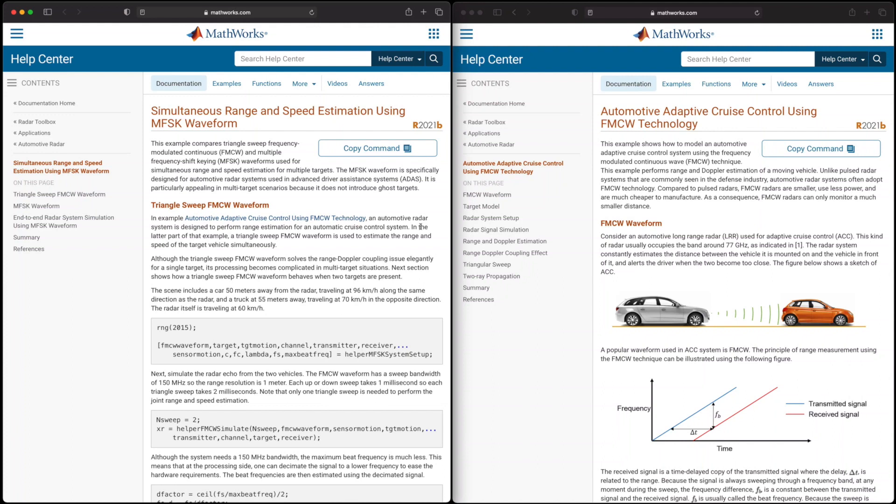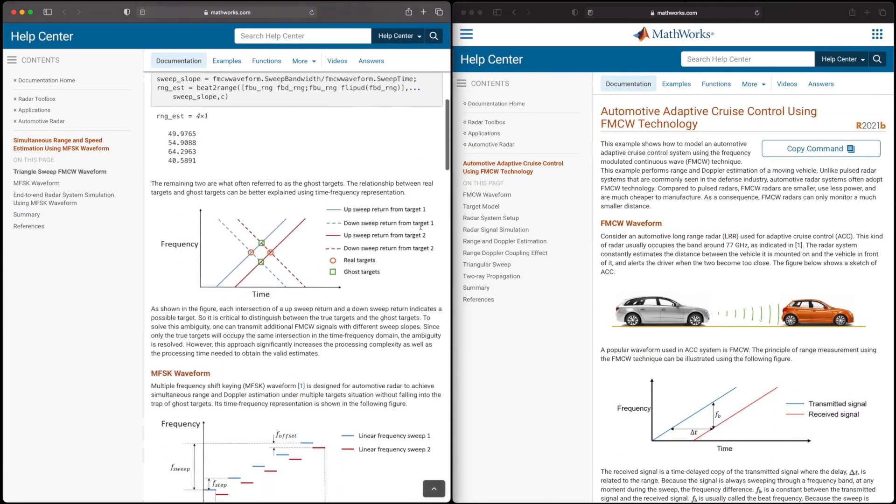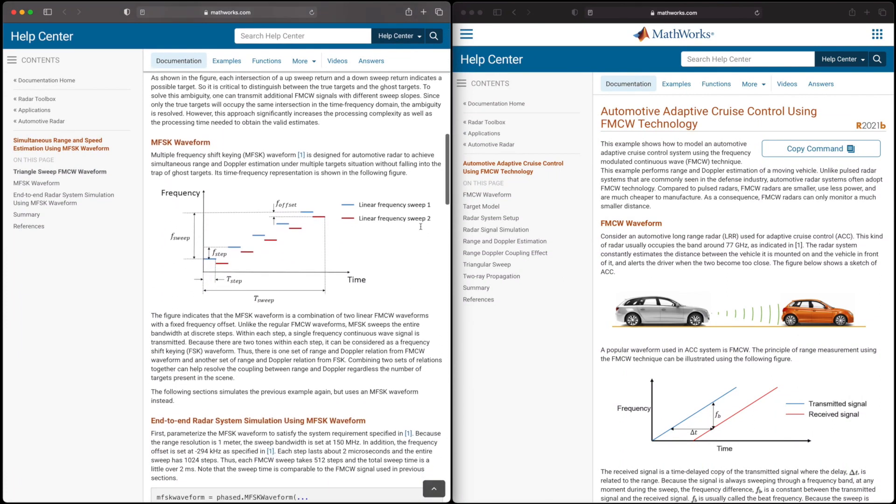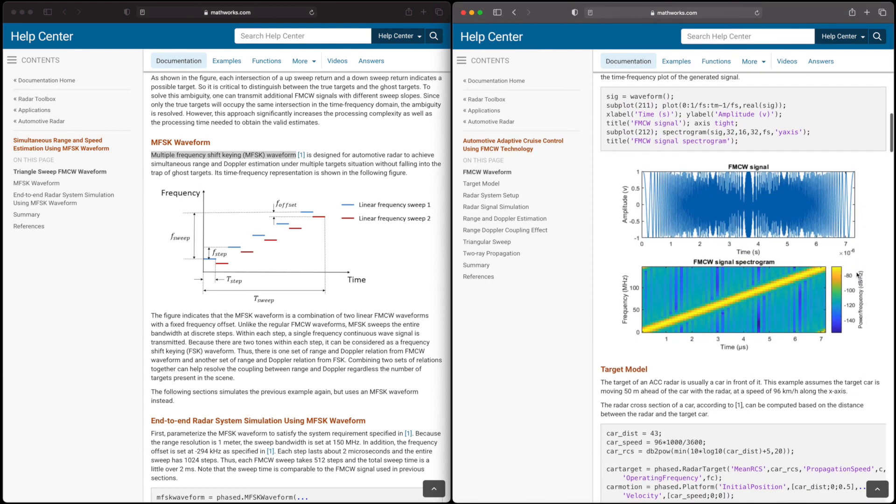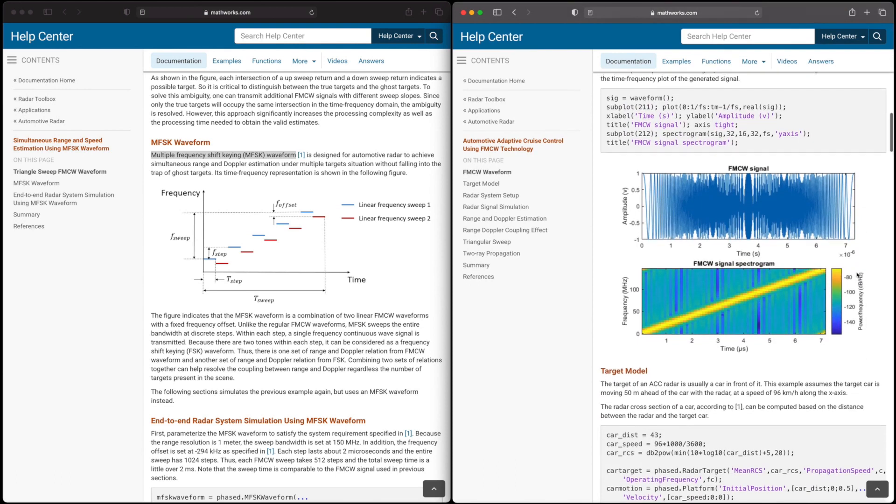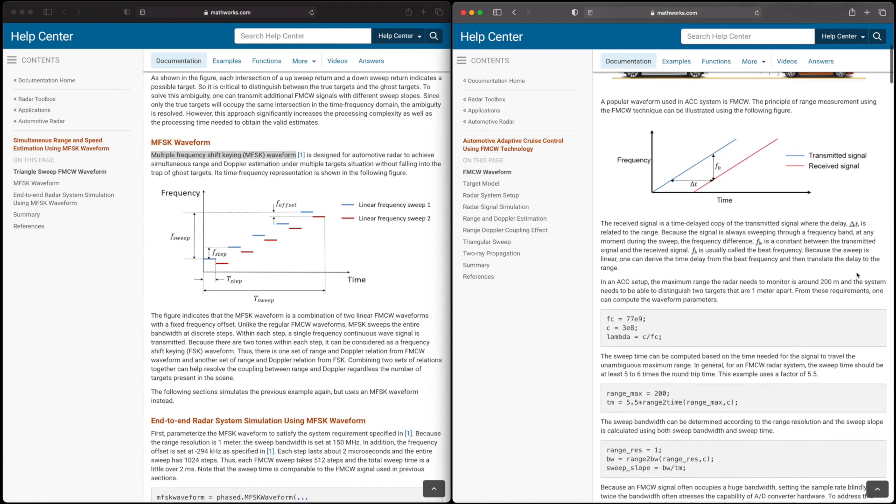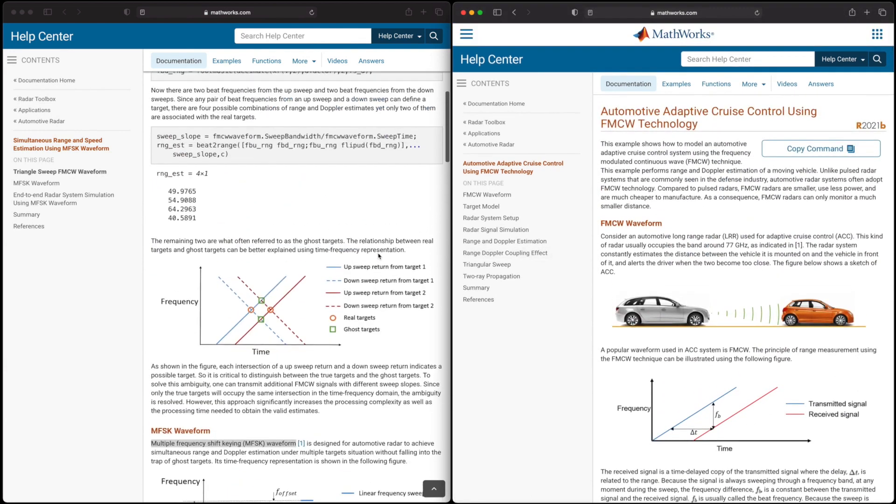But luckily, this isn't the only way to resolve multiple objects in the field of view. We can modulate the frequency of the continuous wave signal in other ways that can more easily separate speed and distance for many targets at once. I'm not going to go into them here, but I've left some really good resources and MATLAB examples that show you how to set up and interpret other modulation schemes like multiple frequency shift keying or MFSK and fast chirp. The idea behind all of them is that through clever frequency modulation of a continuous wave, we can look at the beat frequency that is generated when we mix the transmit and receive signals together to determine range and radial velocity of multiple targets in the field of view.